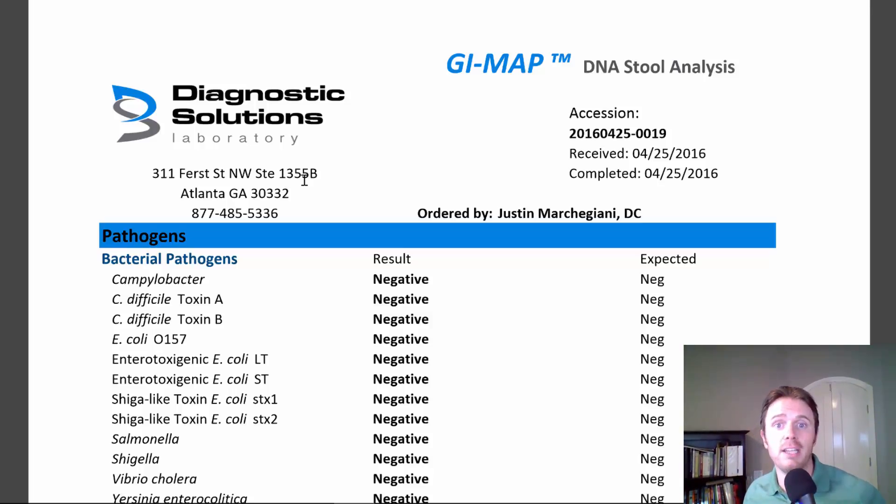We're going to look at a few different lab tests here, some cutting-edge stool tests looking at specific DNA technology, as well as some organic acid testing that will look at various organic acids which are metabolized from protein that have various companion nutrients that give us a window into how other nutrients in the body are doing. We can see malabsorption and stress based on that pattern. Let's roll up our sleeves and dig in.